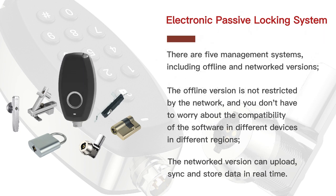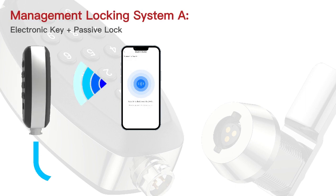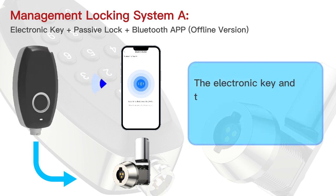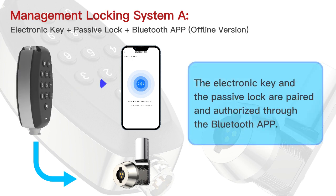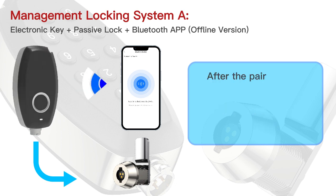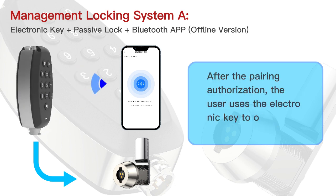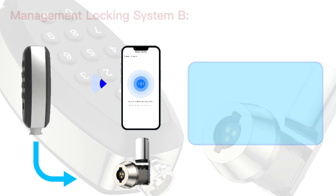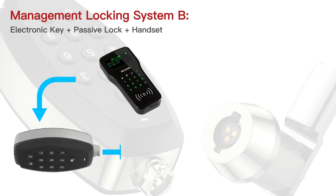Management locking system A: electronic key plus passive lock plus Bluetooth app, offline version. The electronic key and the passive lock are paired and authorized through the Bluetooth app. After pairing authorization, the user uses the electronic key to open and close the lock.